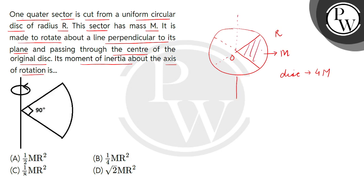this sector that is shown is rotating about this axis. So we need to find its moment of inertia. The moment of inertia of disc about an axis passing through its center and perpendicular to the plane is taken as half M R square.